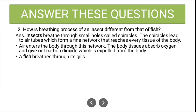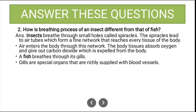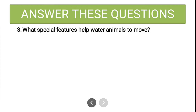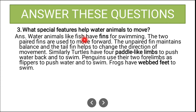Fish breathe through their gills — this is the key difference. Gills are special organs richly supplied with blood vessels. When water flows over the gills, an exchange of gases takes place: the gills absorb oxygen from the water and release carbon dioxide from the blood.